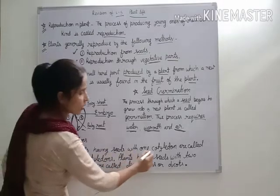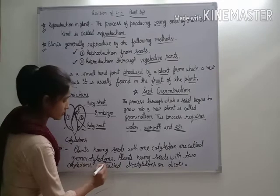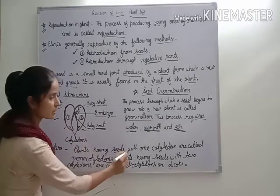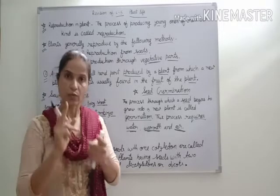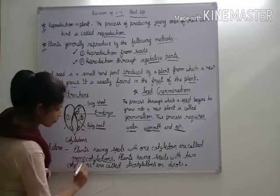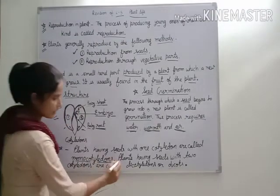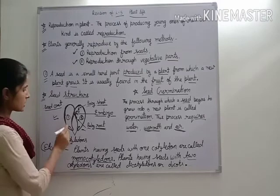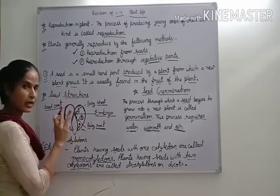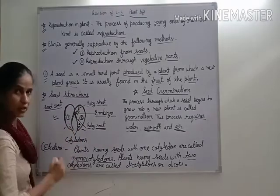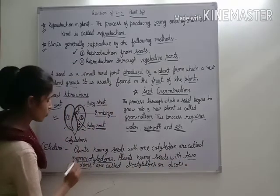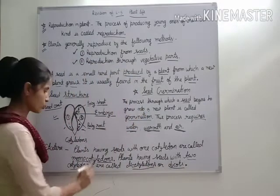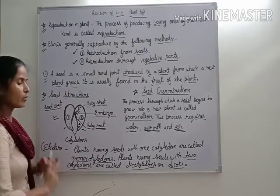Plants having seeds with one cotyledon are called monocotyledon. Plants having seeds with two cotyledons are called dicotyledon. We have seen that seeds have two parts — one cotyledon and second cotyledon. Plants with two cotyledons are called dicotyledons, and one cotyledon plants are called monocotyledons.